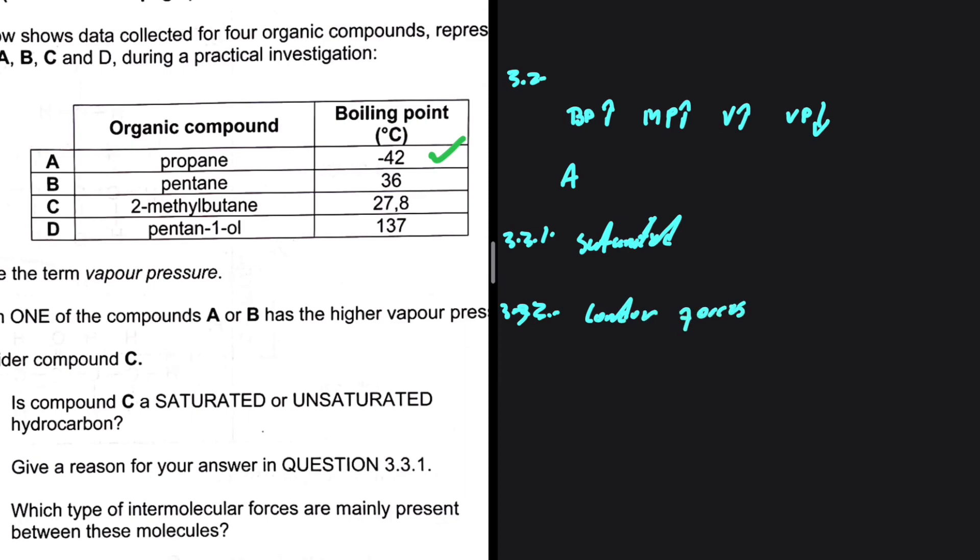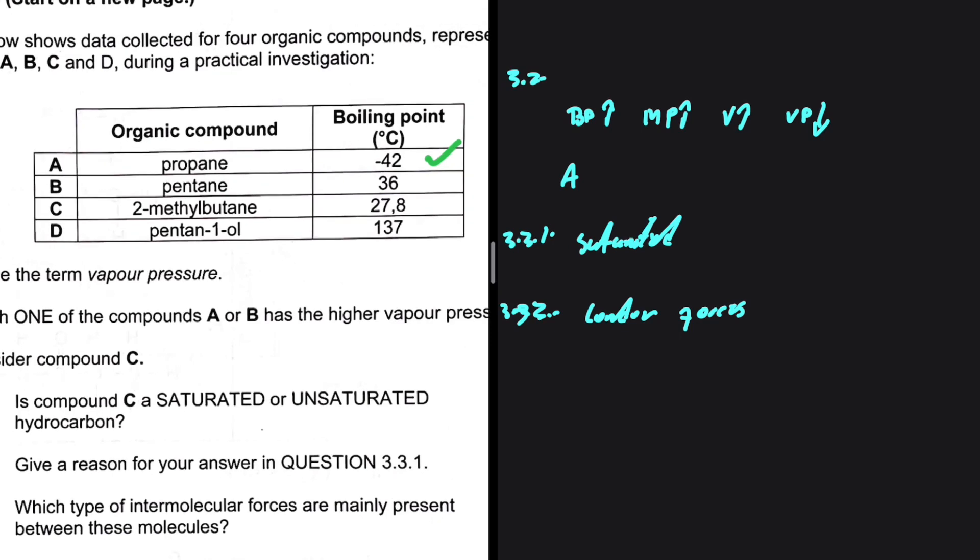compound D, pentane 1-ol. So that is the type of intermolecular force which is mainly present between these molecules. There is London forces in pentane 1-ol. It is just that the strongest intermolecular forces in pentane 1-ol will be hydrogen bonding, but London forces is present.